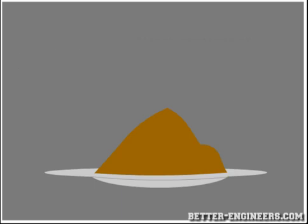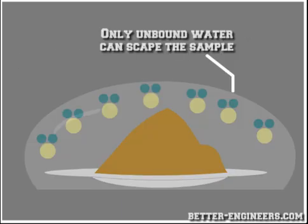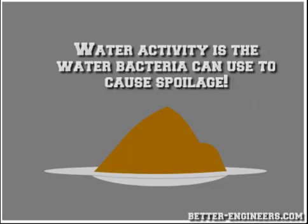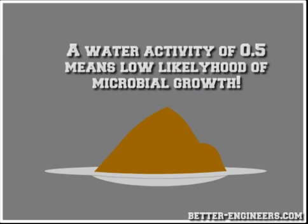As the chemically bound water cannot escape, only the free water will exert vapor pressure, and therefore this characteristic can be used to determine microbial spoilage, chemical stability, and physical stability. For example, in the majority of food samples, a water activity of 0.5 will mean the likelihood of microbial growth is very low.